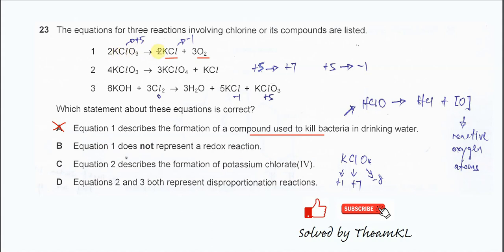After reaction, it forms KCl, which is negative 1. From here we know that the oxidation number change means it's a redox reaction. Of course, oxygen is from negative 2 to 0. So this is a redox reaction. That's why B is also wrong.